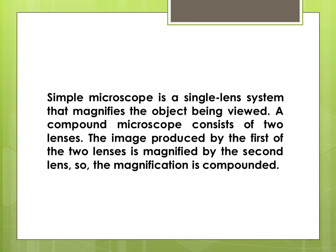A compound microscope consists of two lenses. The image produced by the first of the two lenses is magnified by the second lens, so the magnification is compounded.